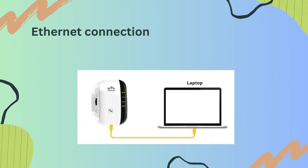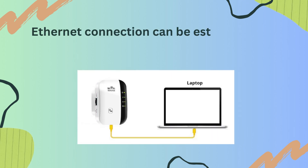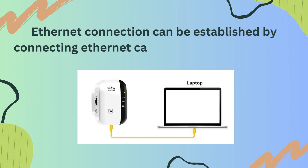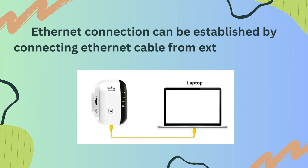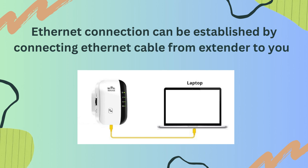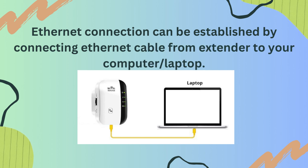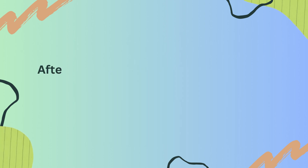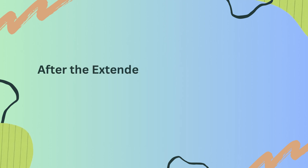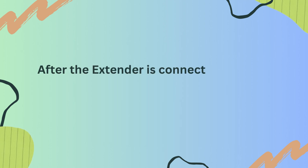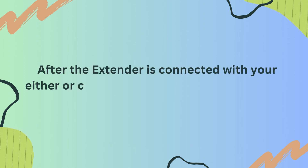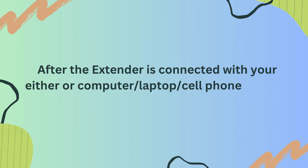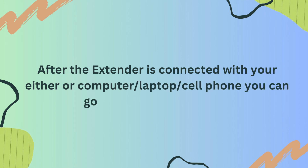An Ethernet connection can be established by connecting an Ethernet cable from the extender to your computer or laptop. After the extender is connected to your computer, laptop, or cell phone, you can proceed with the web-based setup.